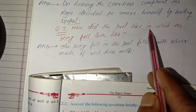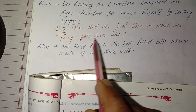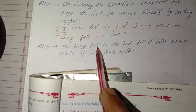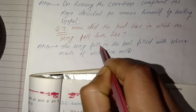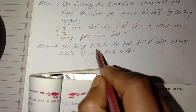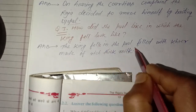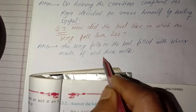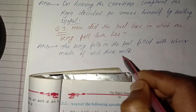Describe the pool in which the king fell. The king falls in the pool filled with kheer — thick, rich milk pudding. Raja ke sapne mein pool kheer se bhara tha.